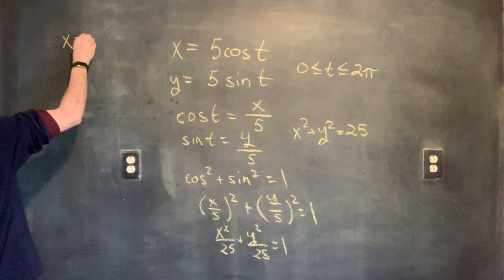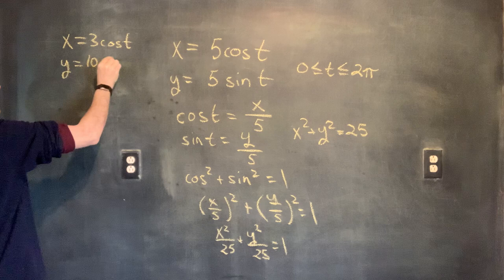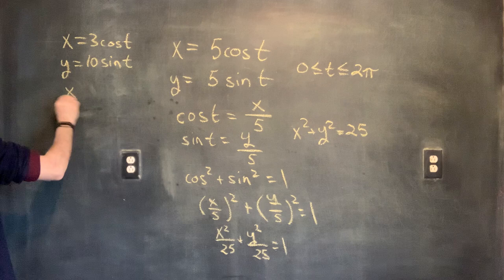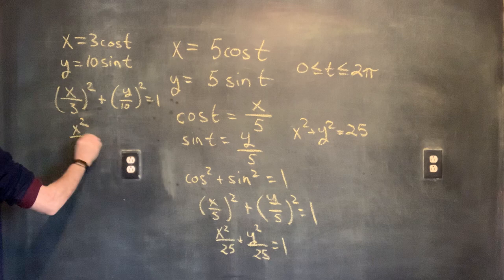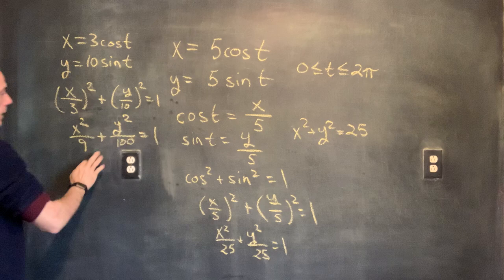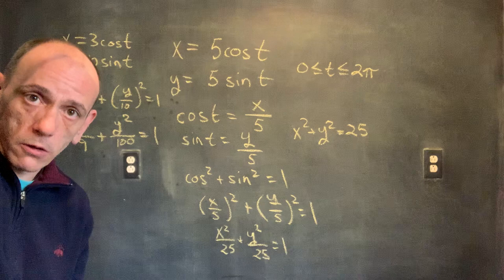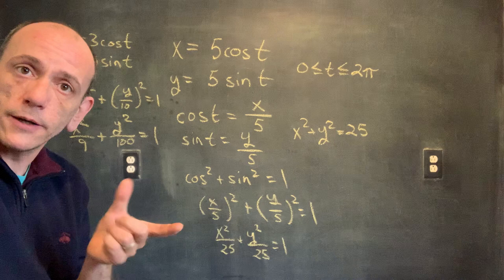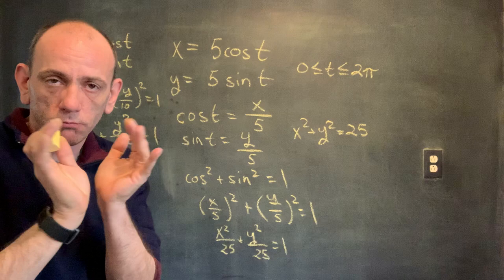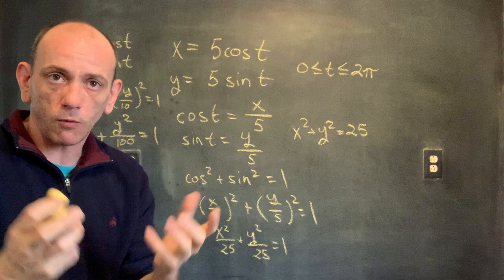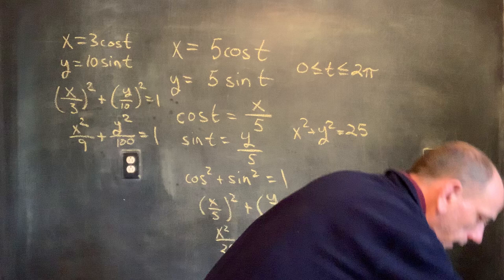The same approach works for the ellipse example X equals 3 cosine T, Y equals 10 sine T. We get (X/3)² + (Y/10)² = 1, which is X² over 9 plus Y² over 100 equals 1 — the equation of an ellipse. It's taller in the Y direction; the semi-major axis is on Y with length 10, the semi-minor on X with length 3. By changing the amplitudes we change the shape: equal amplitudes give a circle, unequal amplitudes give an ellipse.